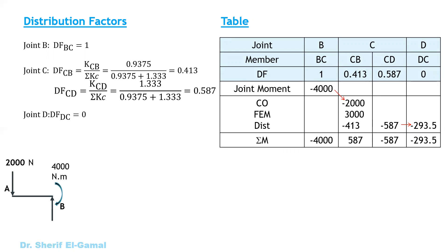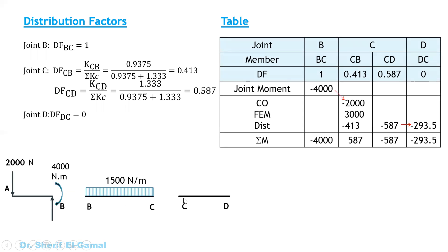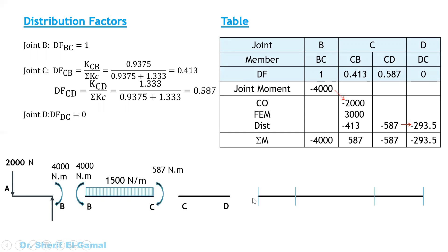To draw the bending moment diagram, identify moments at the supports and end of the beam. The cantilever is a determinate part — draw it directly. For span BC, the moment at B is minus 4000 N·m (counterclockwise, tension on top). At joint C, the moment is 4587, pushing down — draw at the head side. At the last joint, the moment head side is up, so draw at the top. Connect: from A to B it is a straight line (no span load), from B to C use a dashed line baseline with a parabola (uniform load, curving opposite to the moment direction), and from C to D a straight line (no load).